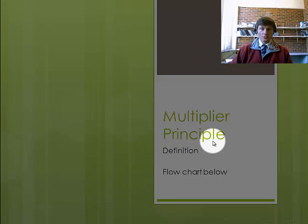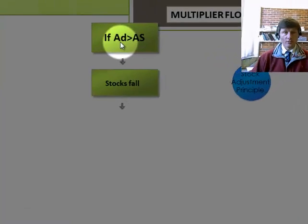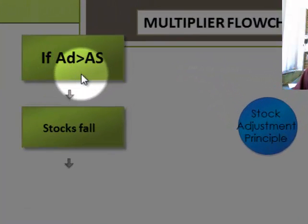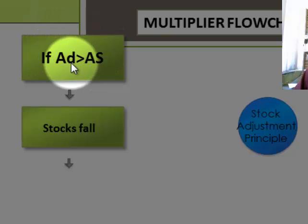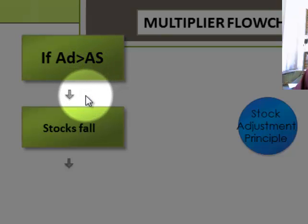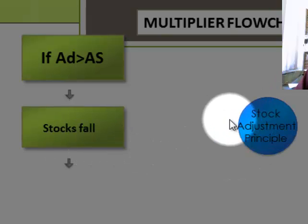I want to first talk to you about the multiplier principle using a flow chart. You would already know what aggregate demand is and what components there are in that, and also that in equilibrium aggregate demand is equal to aggregate supply — that's when there's no tendency to change. In this instance, I'm assuming that if aggregate demand is bigger than aggregate supply, what will happen? Well, if lots more people are demanding goods and services, stocks of goods and services in shops and retail outlets will fall. We call that the stock adjustment principle.